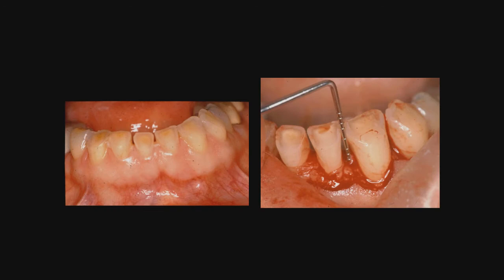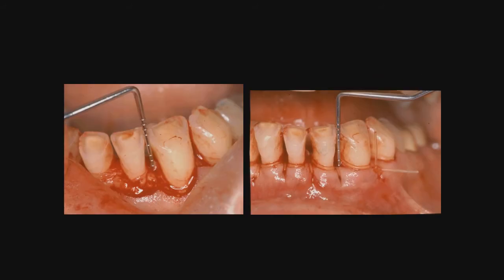Here we see a pre-op of the severe wear on these lower anterior teeth, and if these teeth are crowned, we're going to have to do some crown lengthening. Note the wear, which is symbolic of what we see in an anterior constriction dysfunction. We see the probe in place, and we can see that 5 millimeters from the contact point is where the bone should be, and we have very little tooth structure, especially in the interdental area, to place a crown.